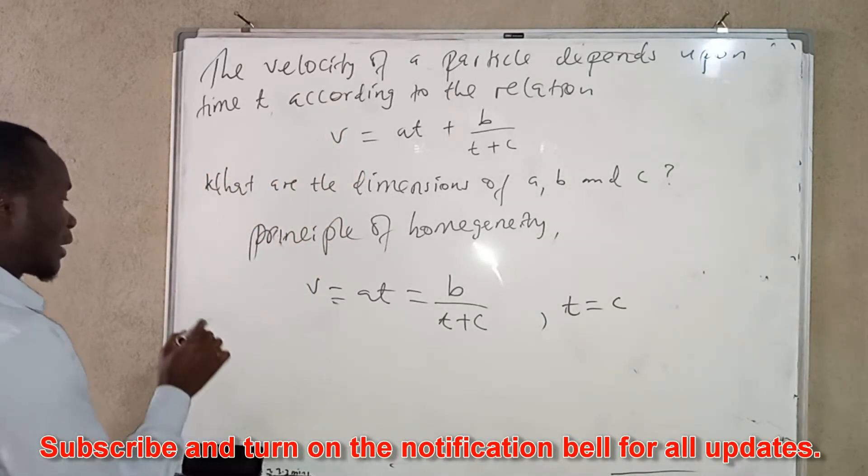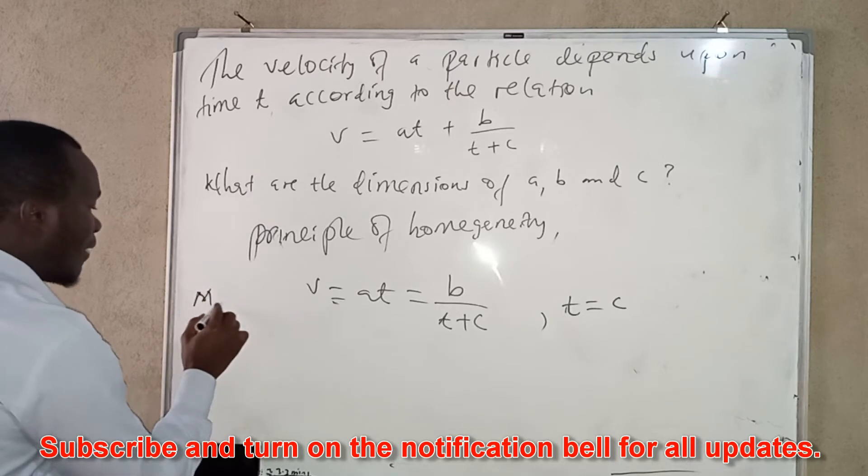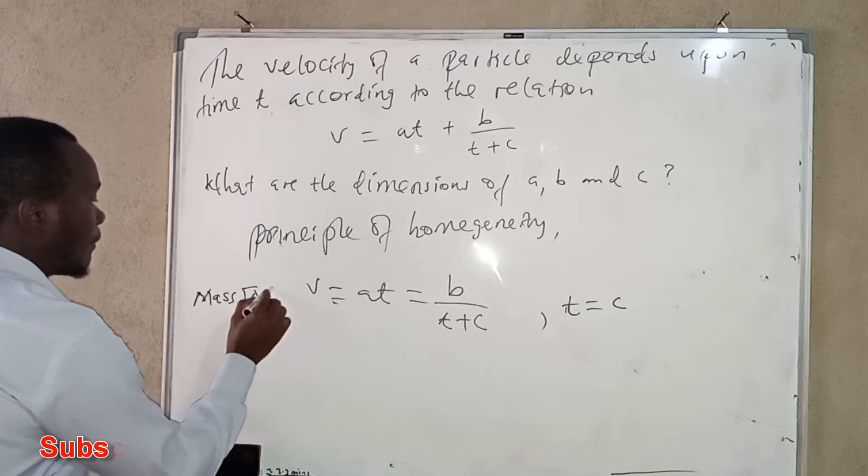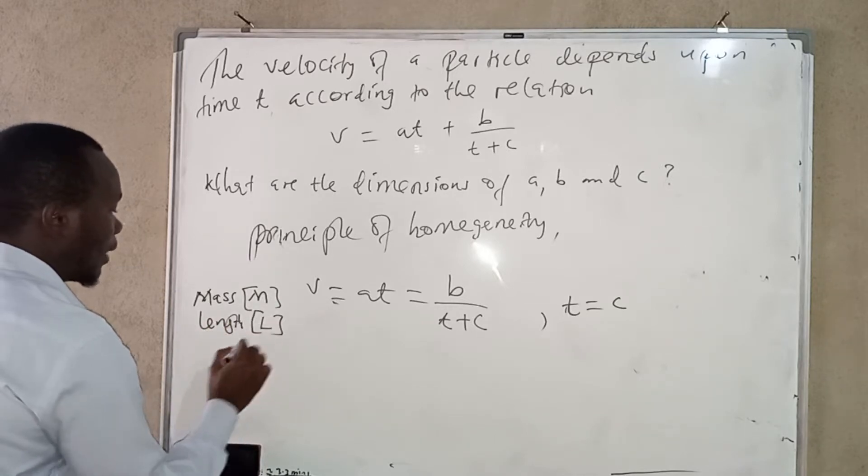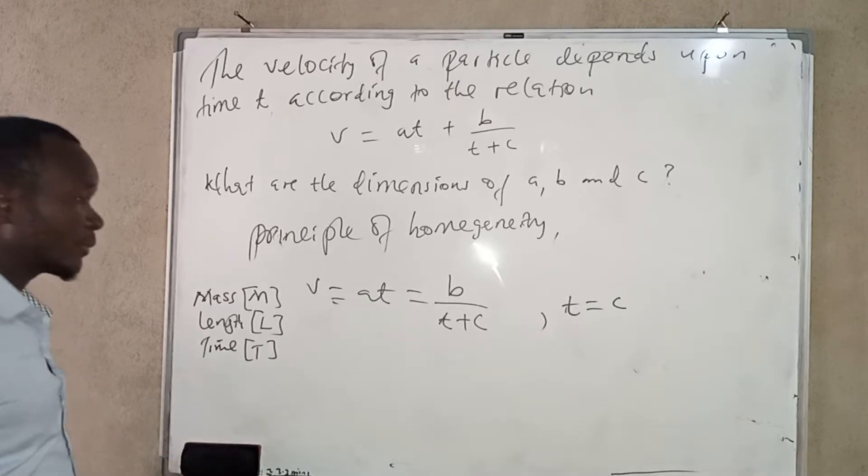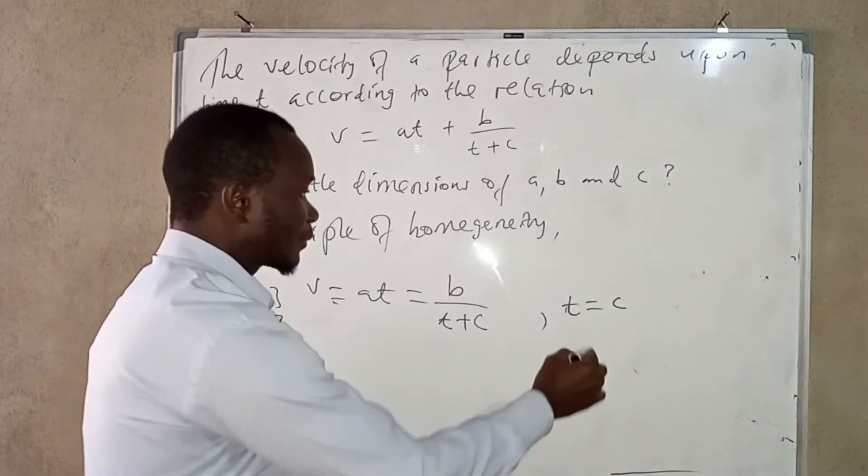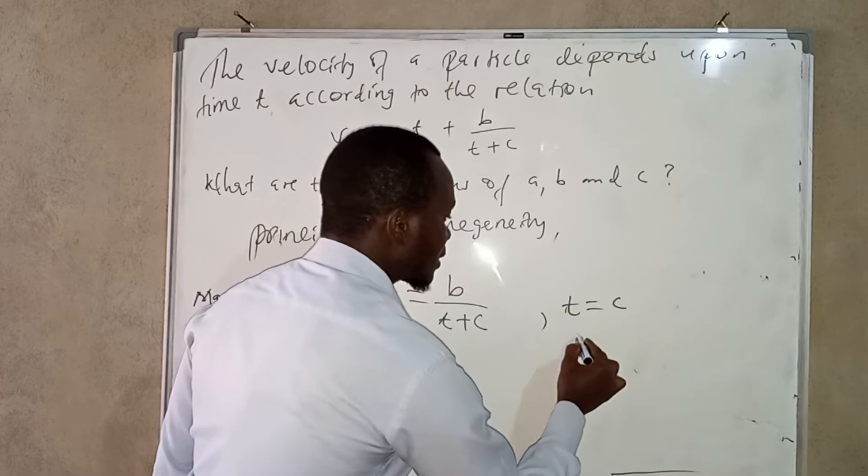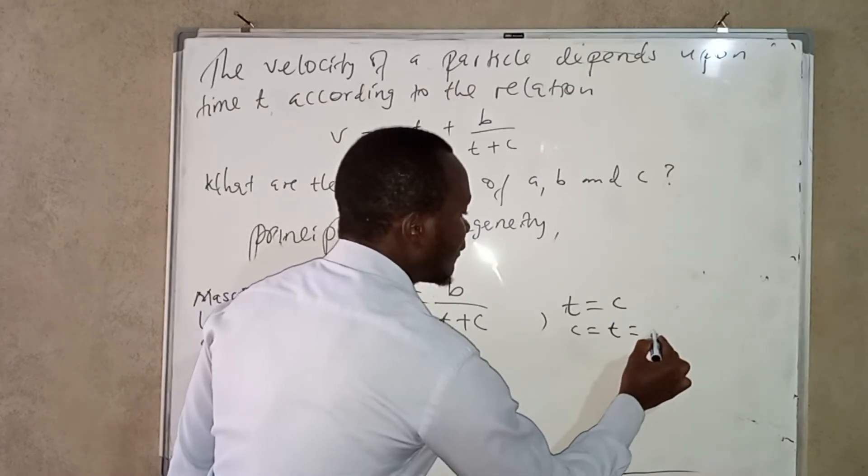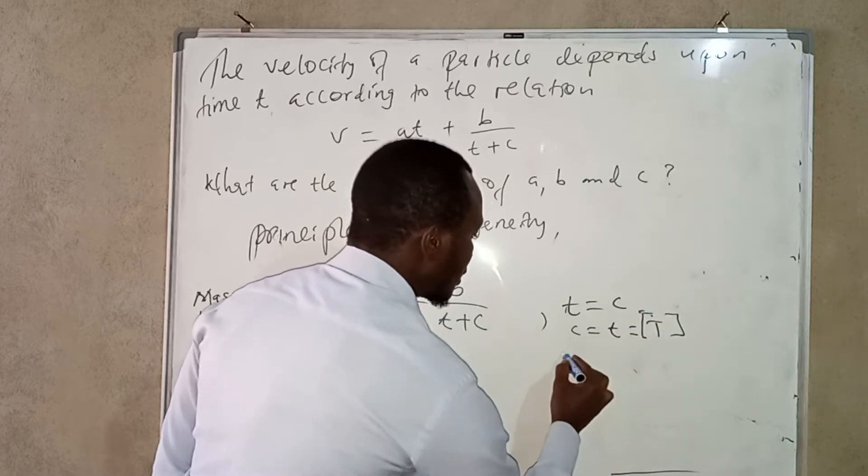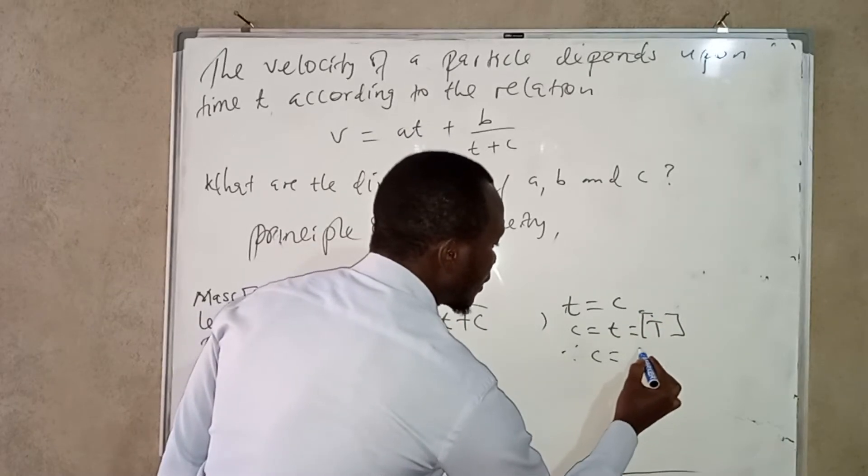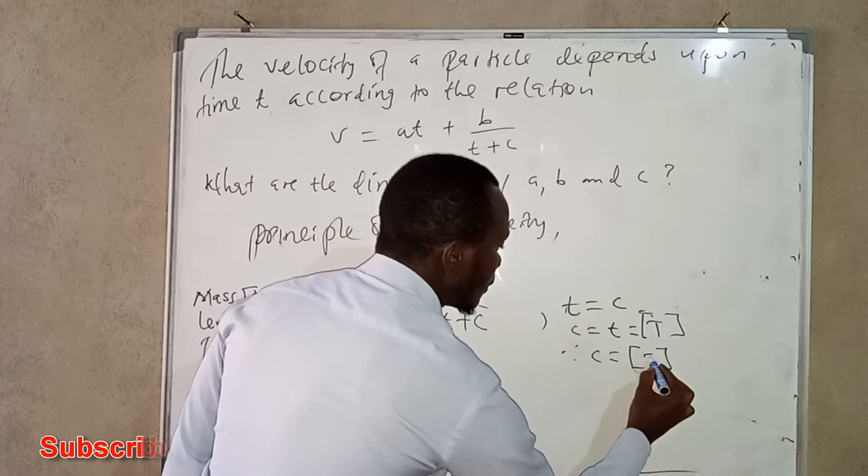About the three basic quantities, three basic quantities you have mass M, we have length L, and we have time T. So here we have, so c has the dimensions, so is equal to T having these dimensions, therefore c is equal to T.